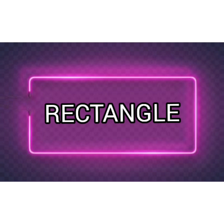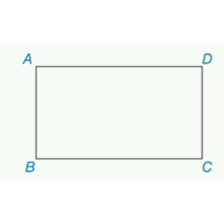A rectangle is a special type of quadrilateral. It is a particular type of quadrilateral with specific properties.